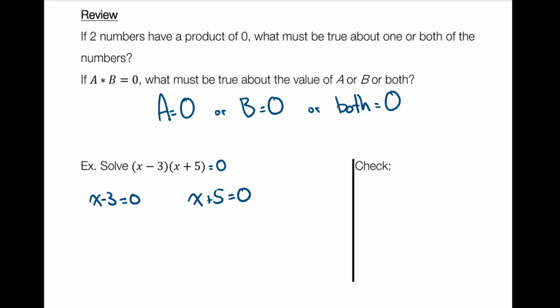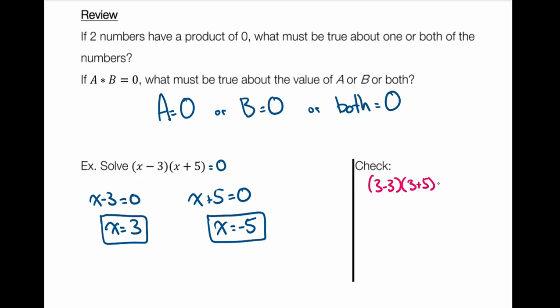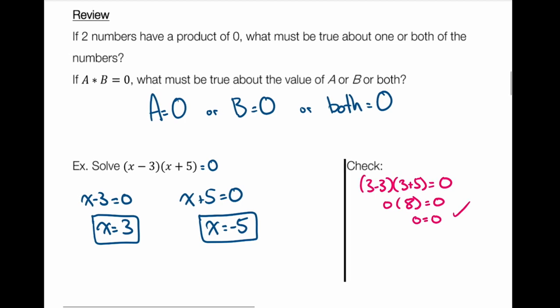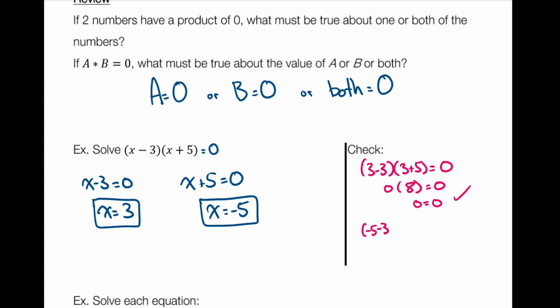I'm going to solve each of these separately. x minus three equals zero: move the minus three over, it becomes plus three — that's one solution, x equals three. x plus five equals zero: move the plus five over, it becomes minus five — x equals negative five is the second solution. To check: three minus three times three plus five equals zero times eight, which is zero. For the second: negative five minus three times negative five plus five equals negative eight times zero, which is zero. Both solutions work.